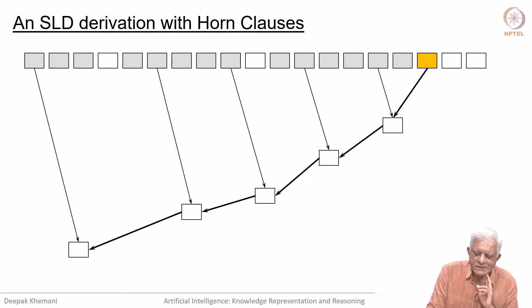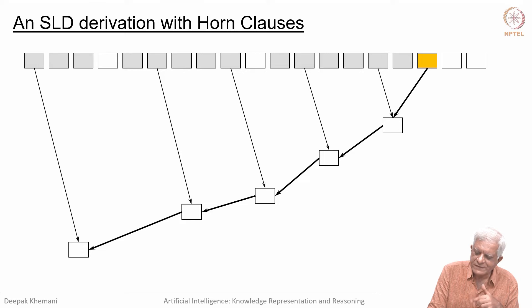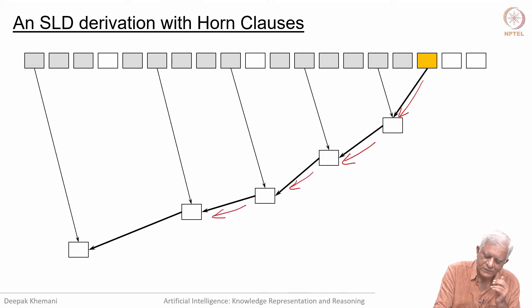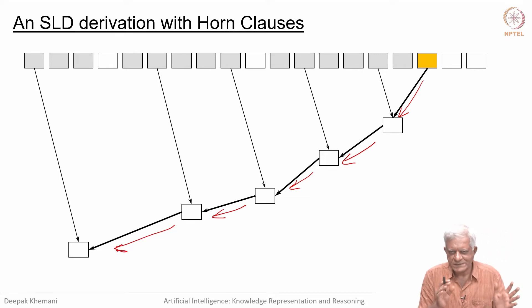This is the structure of the SLD derivation. The grey clauses are the positive clauses, the blank boxes are the negative clauses, and the yellow or orange one is the goal clause. You keep deriving a sequence of negative clauses — this is like backward chaining, going from the goal to sub-goal, from sub-goal to the next sub-goal and so on. I have not written what those clauses are, but this is the structure of the SLD derivation.